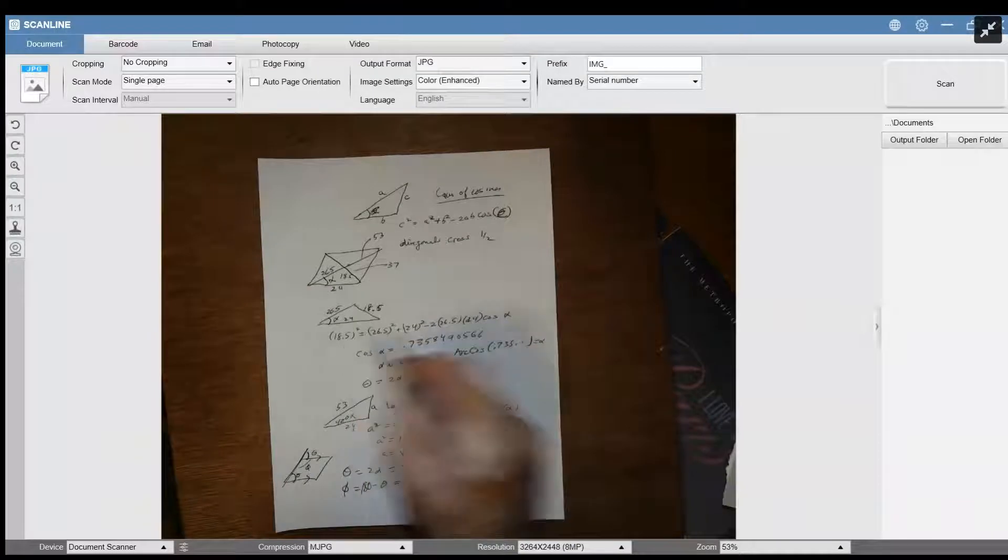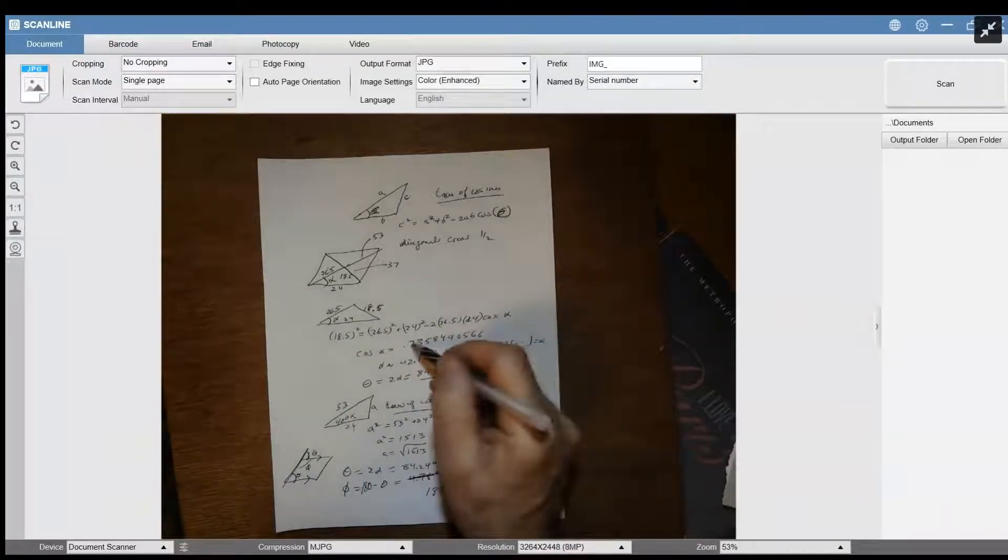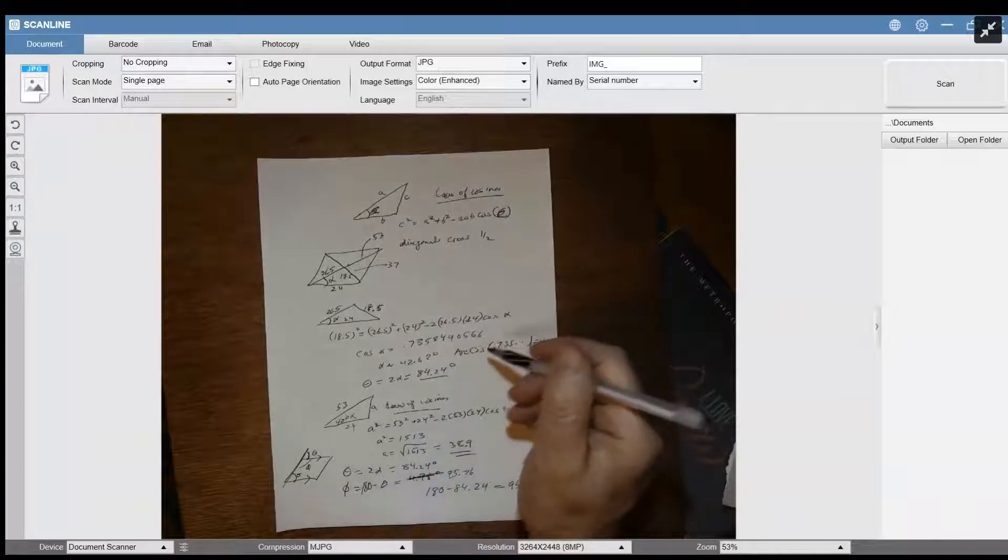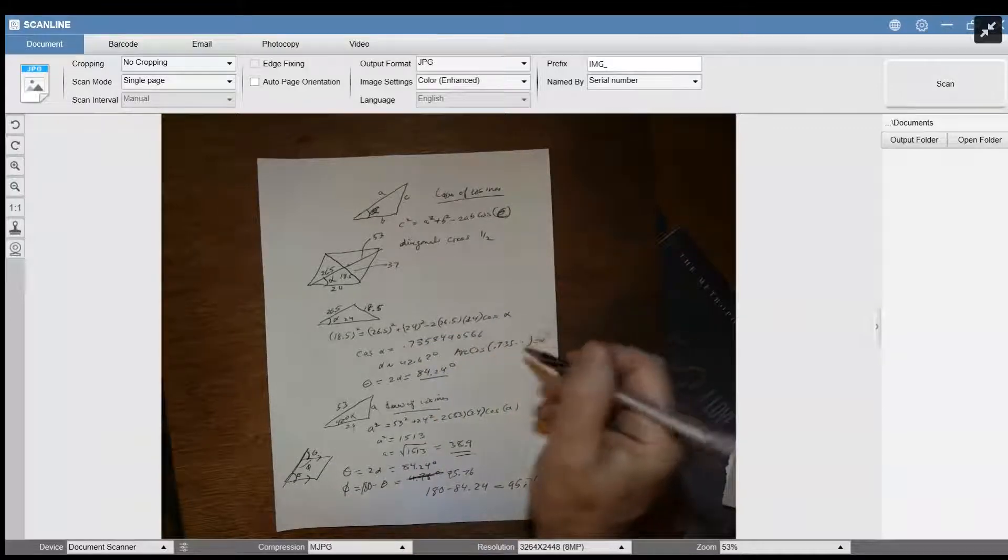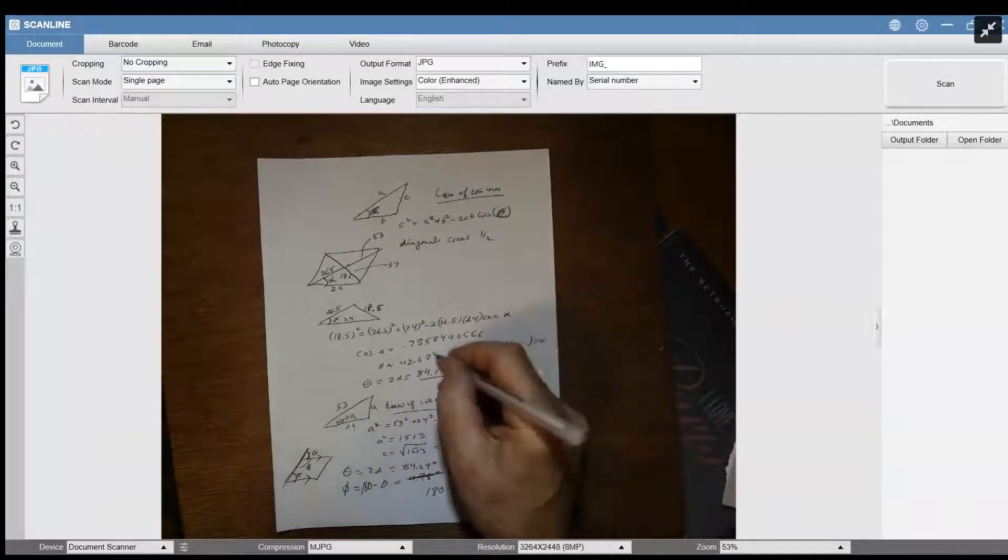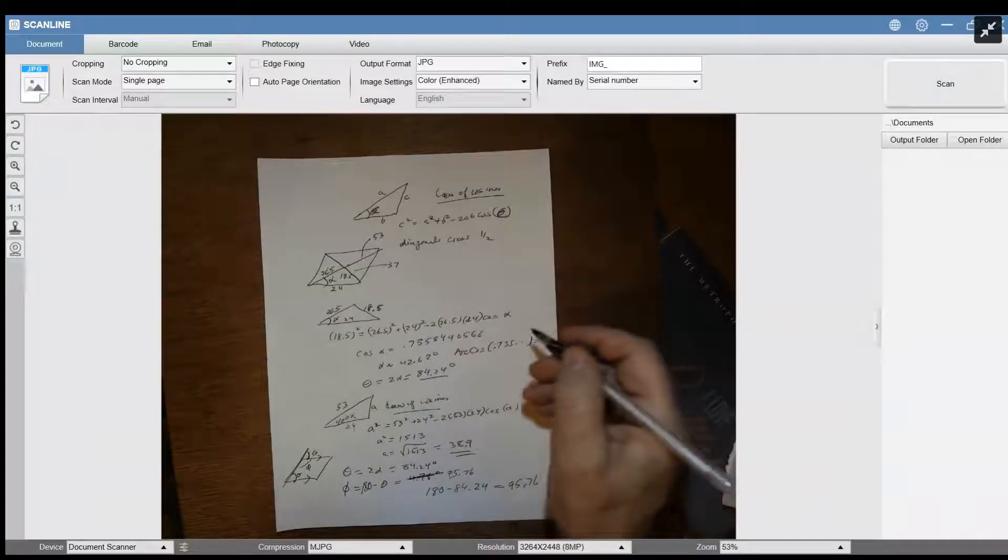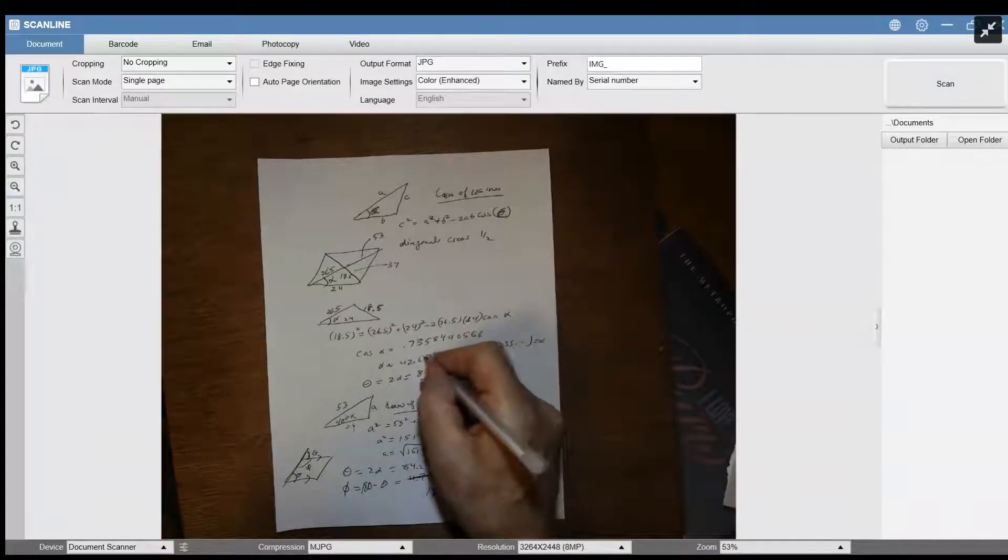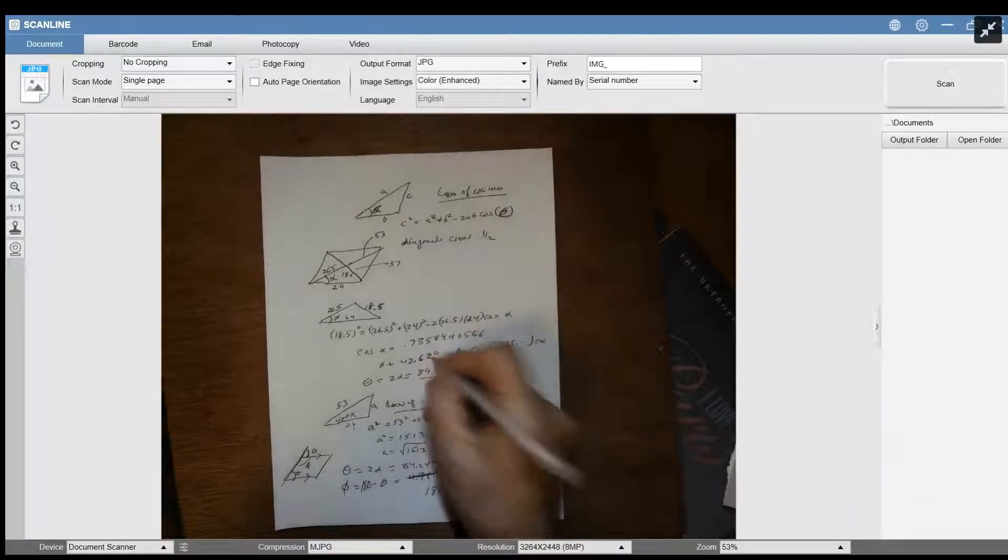So you plug in these numbers and you find out what this alpha is here. The cosine of alpha is 0.733, which the arc cosine of that is about 42.62 degrees.